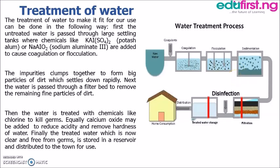After coagulation and flocculation, the water is filtered. This filtration tank filters out the fine particles that were not captured during the flocculation or coagulation process. The fine particles are filtered away before the water is redirected to another treatment tank.